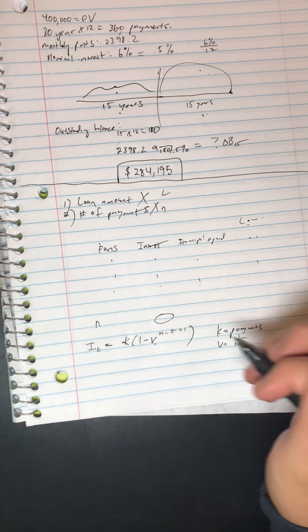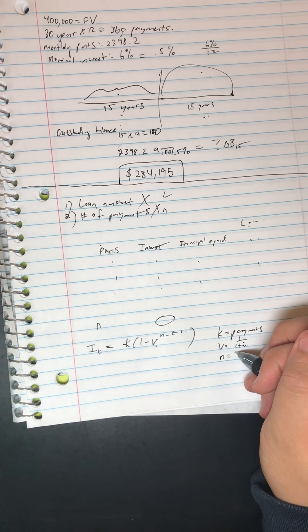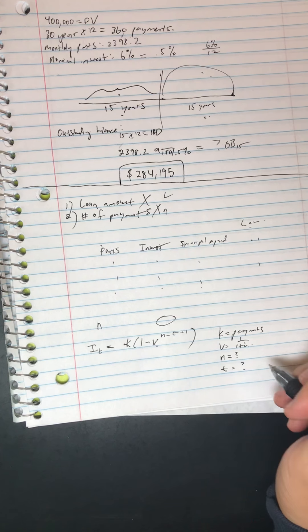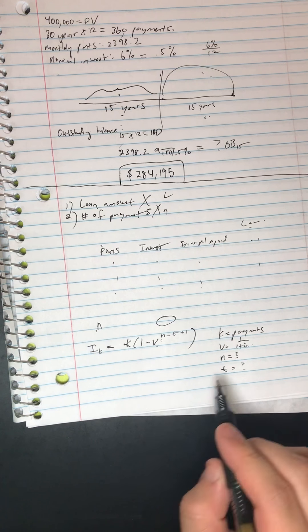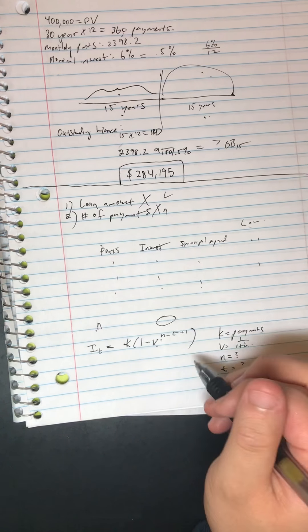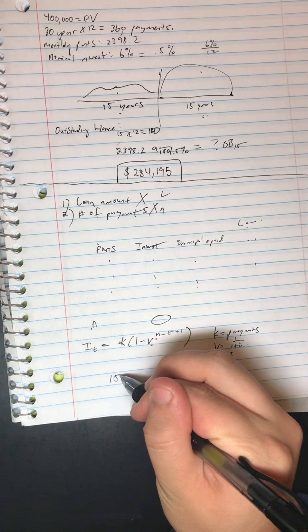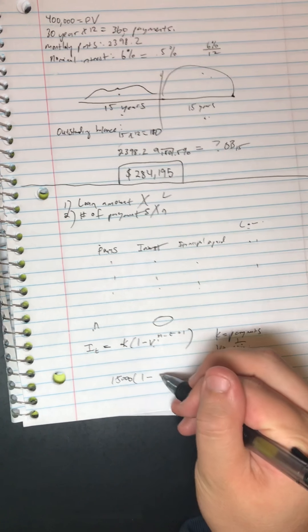We do not know... oh sorry, we do know v. We do not know n, we do not know t, or do we? n is just n, the final payment.